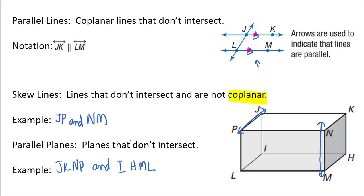Now for both of these examples, there's more than what I've written here. I'm just giving you one example. Another example of parallel planes might be the sides of the boxes. I just chose the top and bottom of the box. Another example of skew lines would be LI and NM.